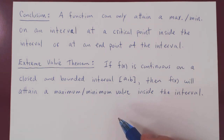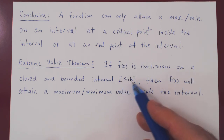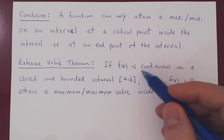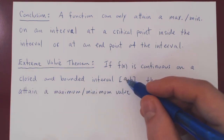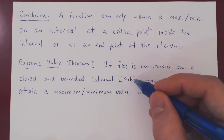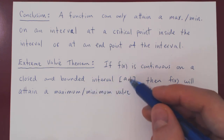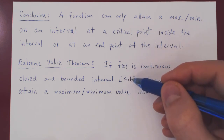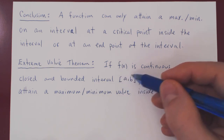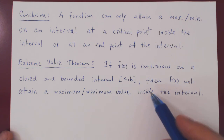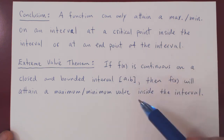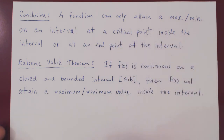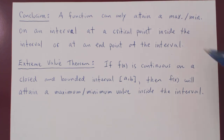If those two conditions are met, the function f automatically has a maximum and minimum value inside the interval from a to b. Closed means the endpoints a and b are included. Bounded means a and b are finite numbers — not infinity. If those two conditions are met, you will find the maximum and minimum values at either the endpoints or at critical points inside the interval. In the following videos, we'll consider examples of these two results.